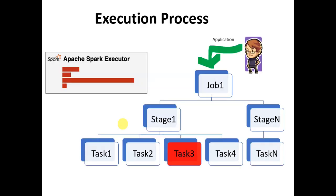Let me explain the execution process when we are submitting an application into the Spark environment. When certain code is submitted for execution, first it will create jobs. Jobs would be divided into multiple stages, and stages would be split again into multiple tasks. If you have one wide transformation, then two stages would be created. If you have 10 wide transformations, it will have 11 stages in total.